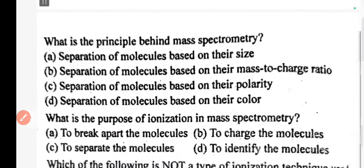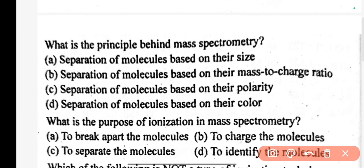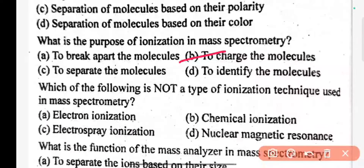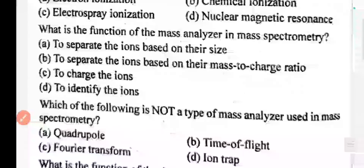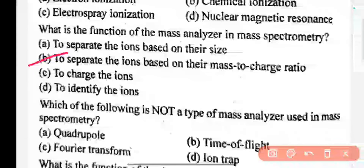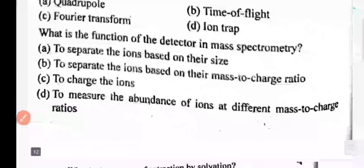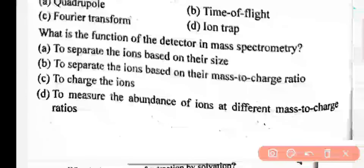In proton magnetic resonance (PMR), what property of the proton is detected? Nuclear spin. What is the principle behind mass spectroscopy? The correct answer is B: separation of molecules based on their mass-to-charge ratio. What is the purpose of ionization in mass spectroscopy? The correct answer is B. Which of the following is not a type of ionization technique used in mass spectroscopy? Nuclear magnetic resonance. What is the function of the mass analyzer in mass spectroscopy? Which of the following is not a type of mass analyzer used in mass spectroscopy?